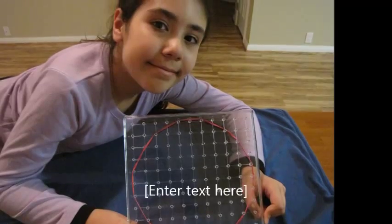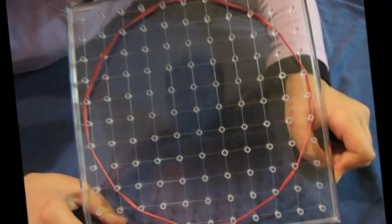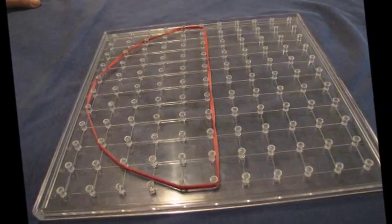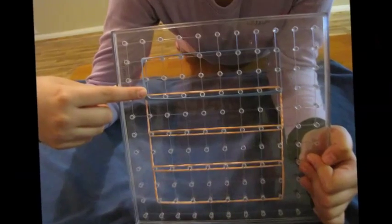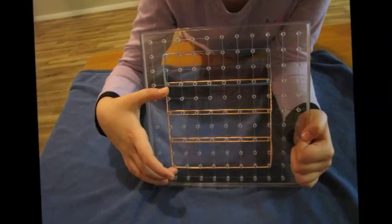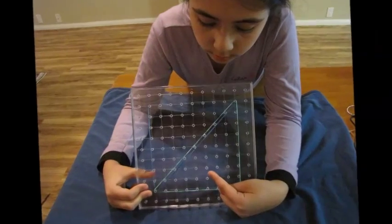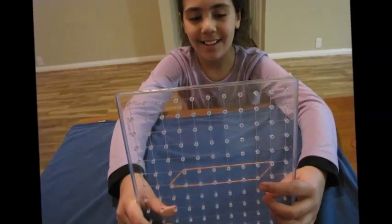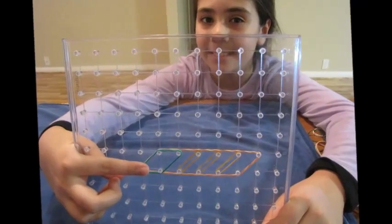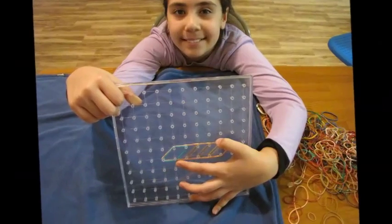This is a circle. This is a semicircle or a half circle. This is 25% and 75% in fractions. This is half or 50%. This is a parallelogram. This is one fourth and then three fourths.